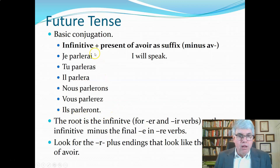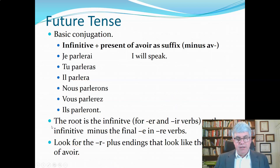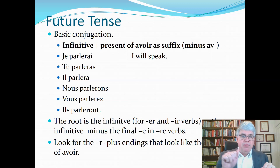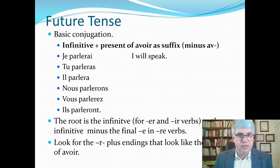And then 'ils parleront'. So they all have an R in them, and that R is one of the keys to recognizing the future tense. Basically, the root of the future tense is the infinitive — generally exactly the infinitive for -ER and -IR verbs, or if you've got an -RE verb, you drop off the E at the end. The endings all look like the present tense of avoir.